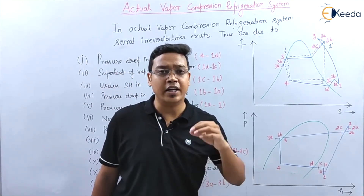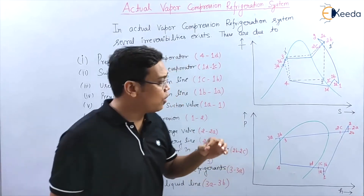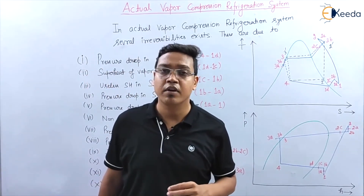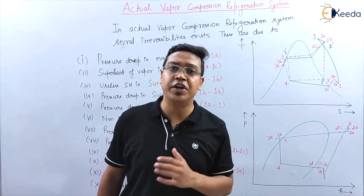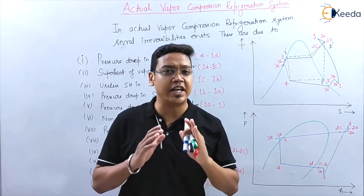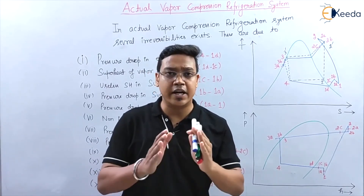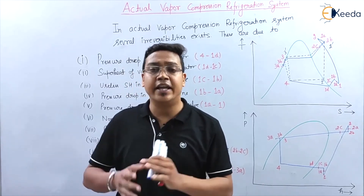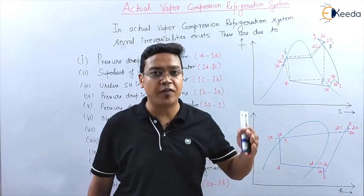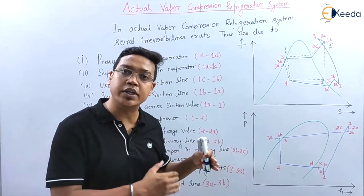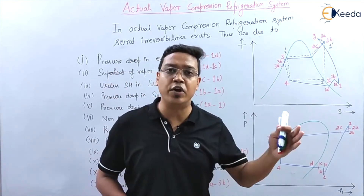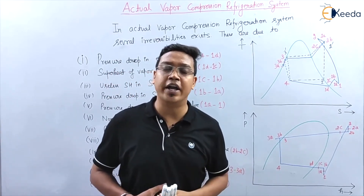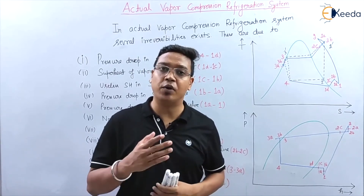In this video we have seen the actual vapor compression refrigeration system. In the next video, we will study about the types of refrigerants used in AC systems like window AC and split AC. Have a good day and thanks for watching.